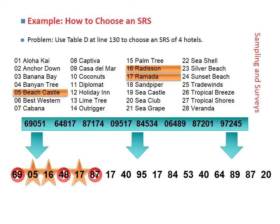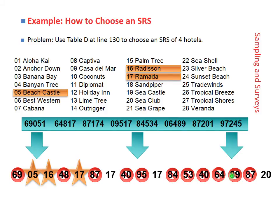Now we're just looking for one more. The next number is 87 — not an option since we only have 28 hotels. Then we see 17 again, but we've already chosen hotel number 17, so we don't choose it again. Continuing through, 40, 95, 84, 53, 40, 64, 89, and 87 are all out of range or already chosen.